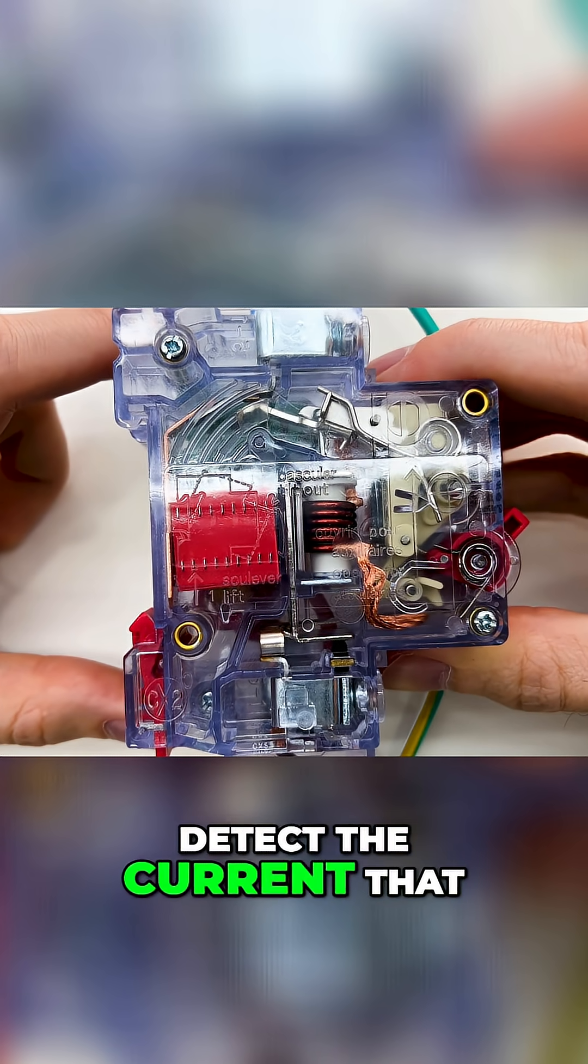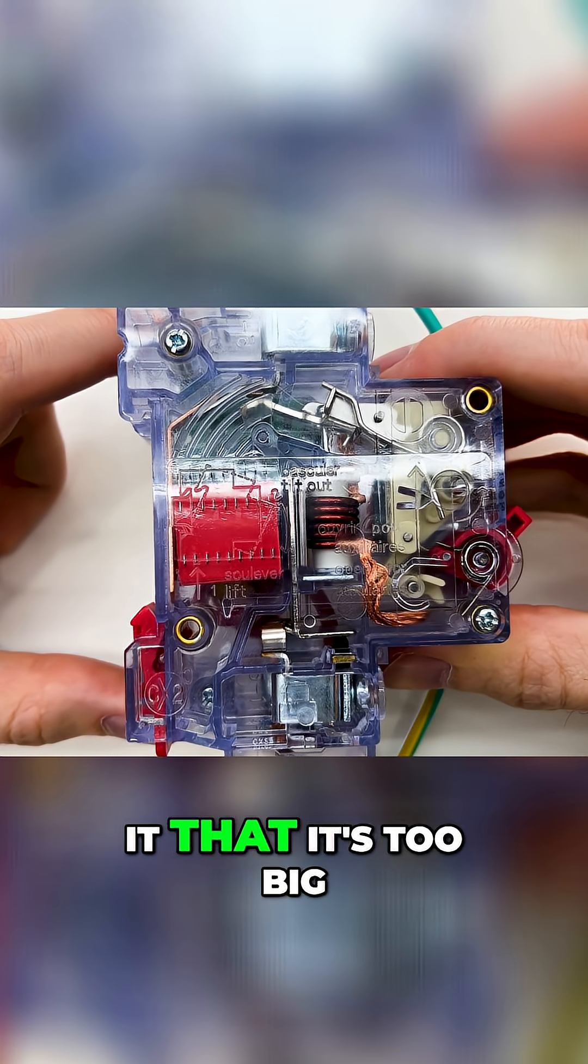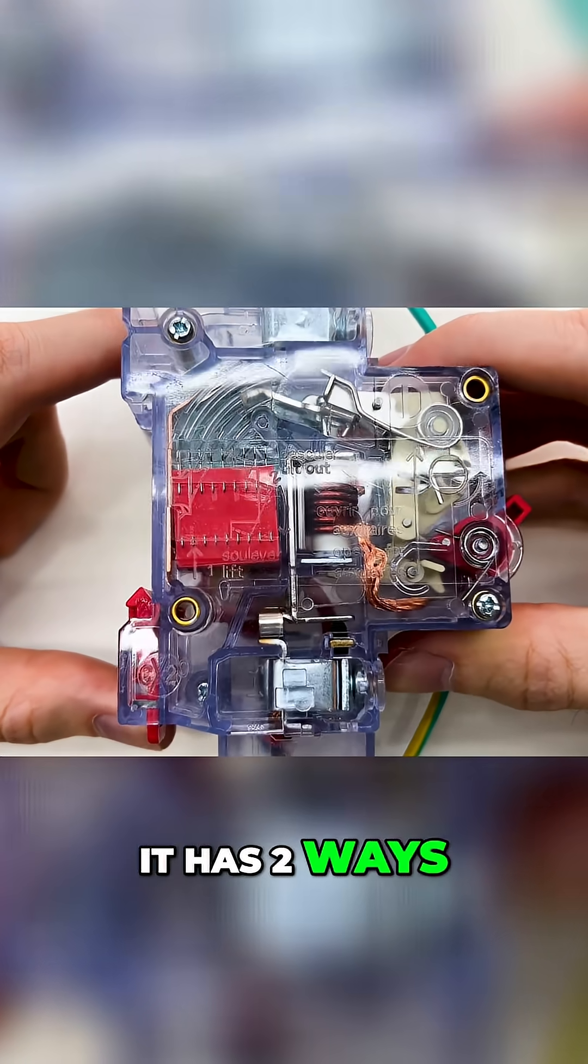And how can it detect the current that is flowing through it, that it's too big? It has two ways.